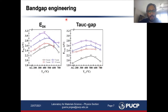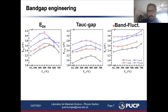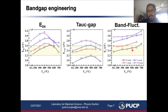Here I'm showing the Tauc gap versus the annealing temperature for these four different samples, as well as for comparison purposes the E04 absorption bandgap. On the right, I'm presenting the optical bandgap determined with the band fluctuations model. We see several features, but first, it seems that depending on the model we use, we might have a material with a bandgap inside or outside the suitable region for a photoelectrochemical device.